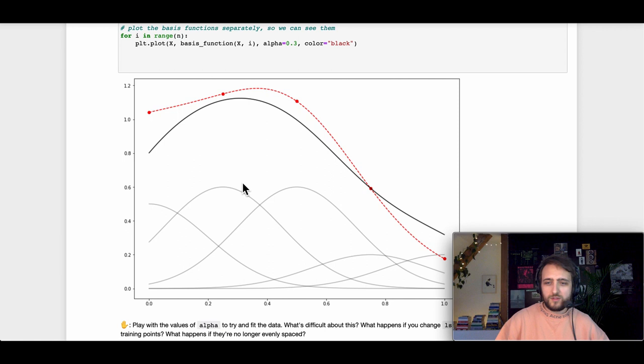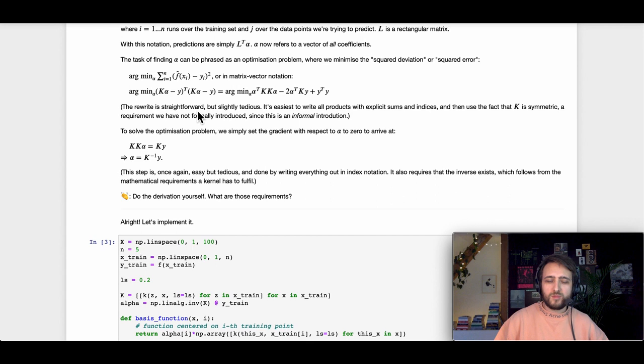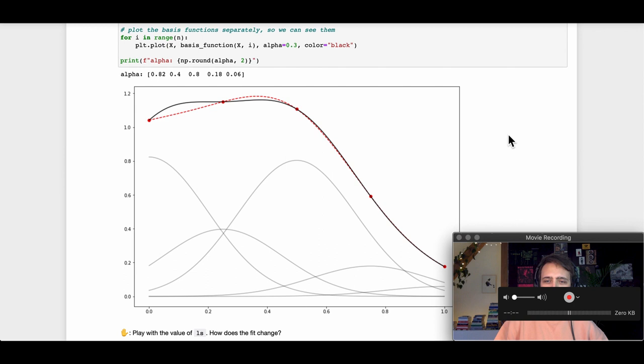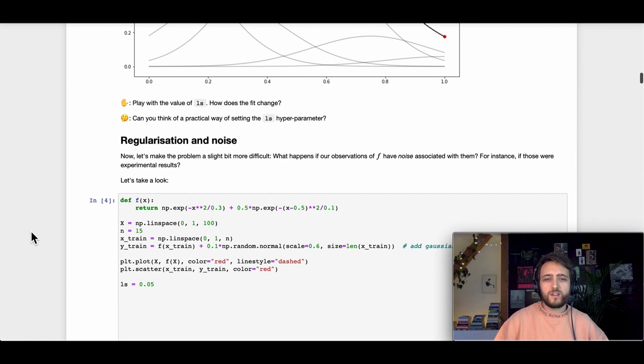The question is how do we get to these parameters? The answer is essentially we phrase it as an optimization problem that can be solved analytically by basically matrix inversion. Then we arrive at some way to obtain these weights. Here, for example, are the optimized weights. You can see this is a much better fit.